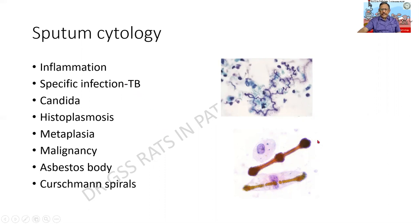Rarely, we see something like this — a dumbbell-shaped structure called the asbestos body, found in a disease called asbestosis. And we can also see Curschmann spirals, as in the case of bronchial asthma.